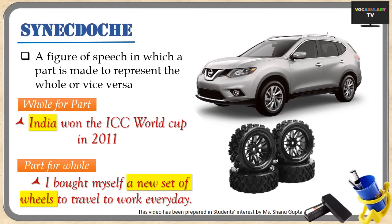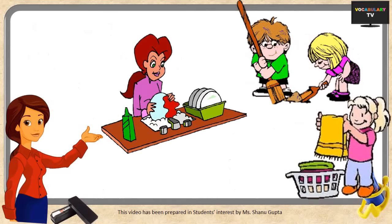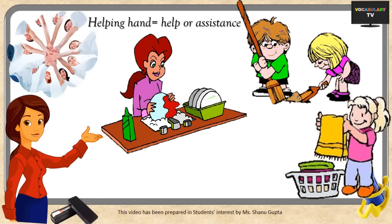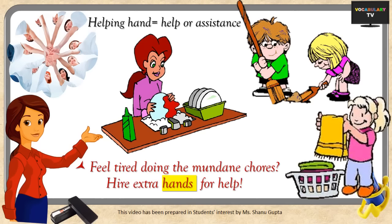In synecdoche we can also use the whole to represent a part of it. For example, a country name can represent a sports team: 'India won the ICC World Cup in 2011' means the Indian national cricket team won. Similarly, 'hands' or 'helping hands' can refer to a person who helps you: 'If you feel tired doing the mundane chores of your house every day, you can perhaps hire some extra hands for help.'